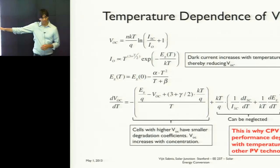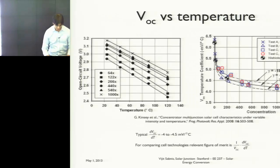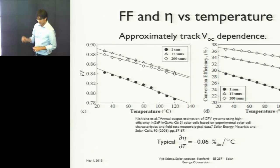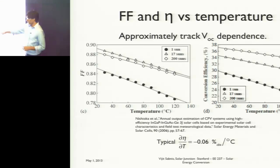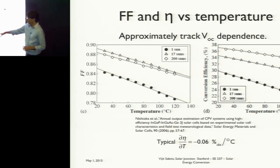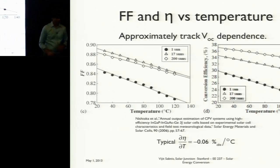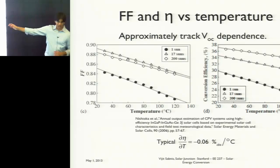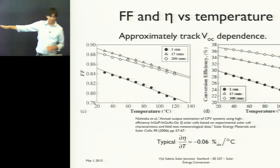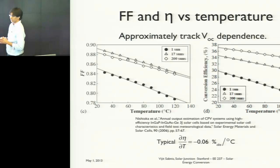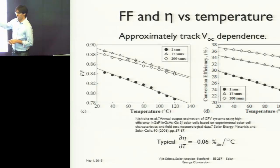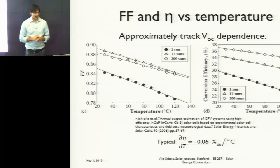The efficiency degradation versus temperature for a multi-junction solar cell is about 0.06% per degree C — a factor of 2, 3, or 5 smaller than what you find in traditional single-junction PV. So again, for very hot climates, multi-junction solar cells offer a significant advantage.